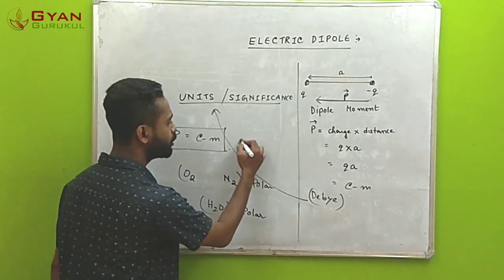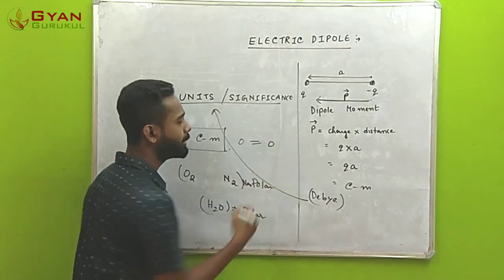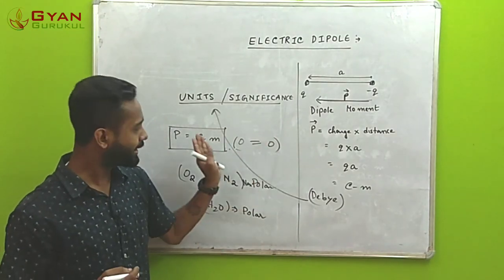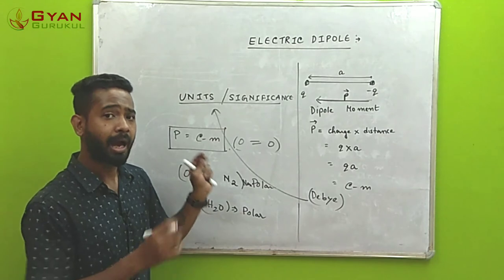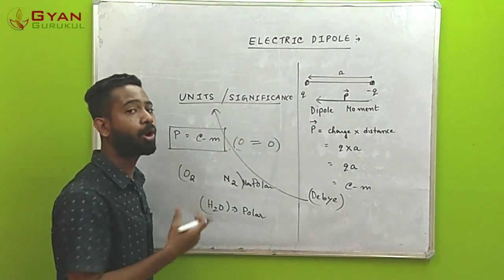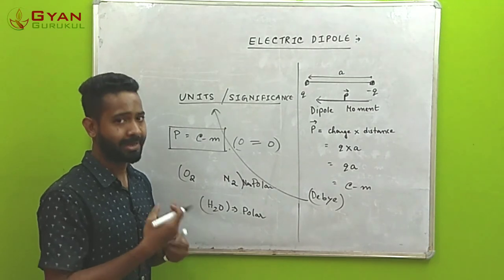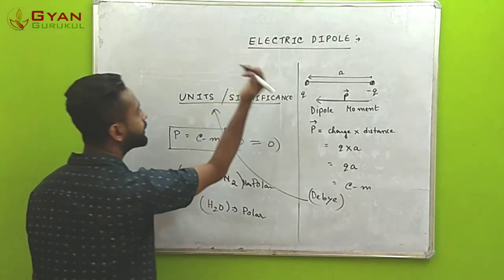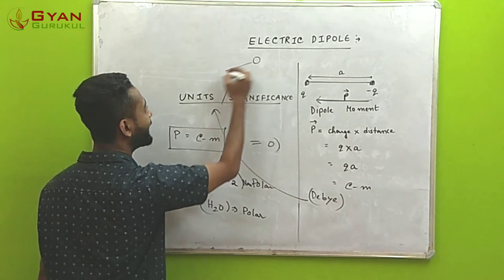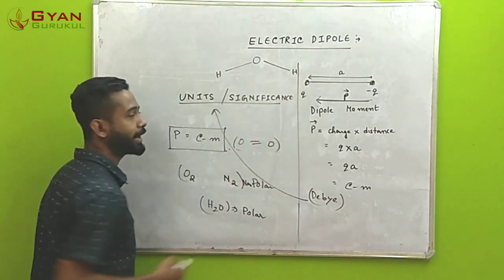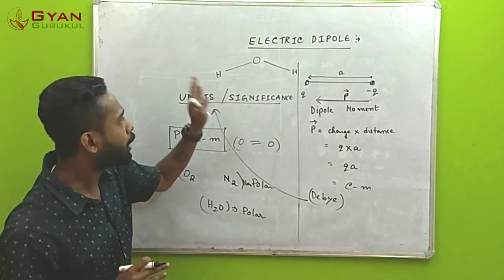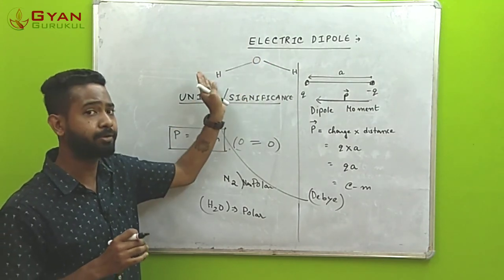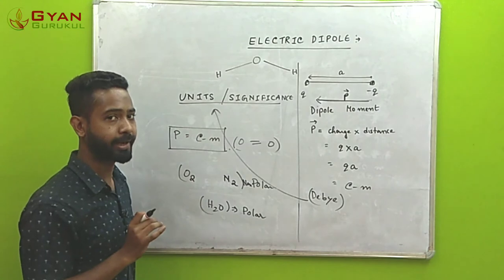To understand this clearly, consider O2: it is a double-bonded molecule. Since both oxygen atoms are exactly equal and alike in all respects, the net dipole moments cancel out and sum to zero, making O2 non-polar. On the other hand, for a polar molecule like H2O, the structure is bent in shape.